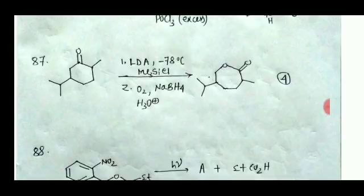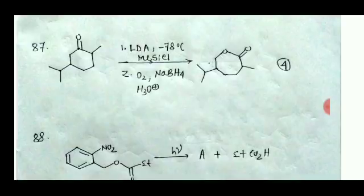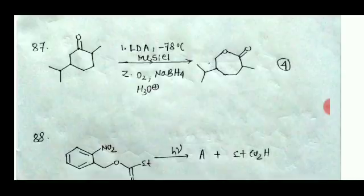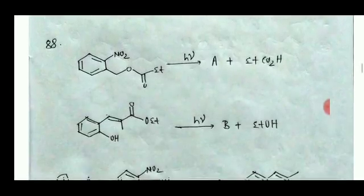For question number 87, the first step is deprotonation by LDA at minus 78 degrees Celsius. From the less hindered, less substituted side the deprotonation will occur. After that, ozonolysis takes place, and during ozonolysis an aldehyde — actually an acid — will form. A cyclization will then take place to give this product. Option 4 is the correct answer.